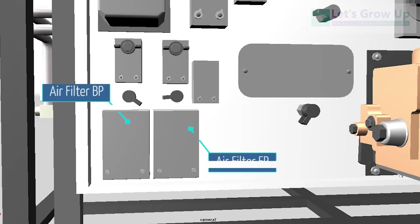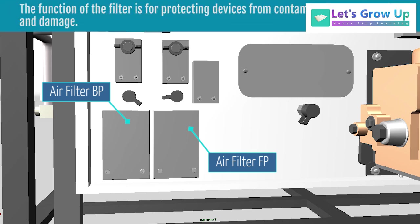Air filter FP. Air filter BP. Filters. The function of the filter is for protecting devices from contamination, malfunction, and damage.